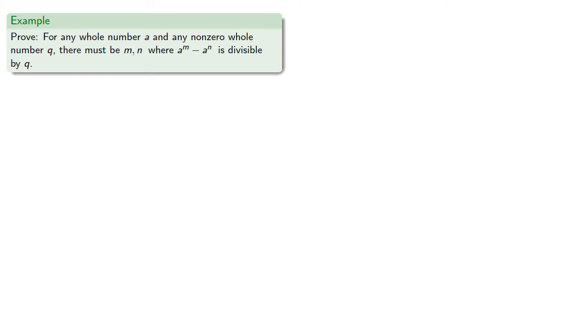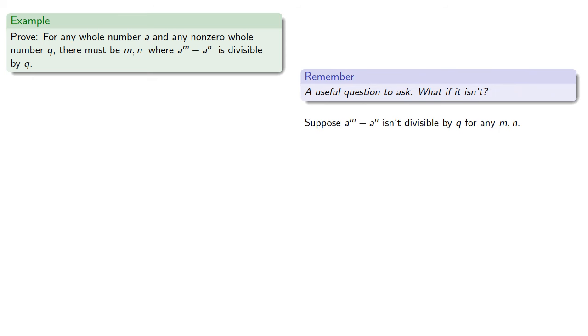So a useful question to ask is, what if it isn't? In this case, suppose our difference isn't divisible by q for any m or n. There must be some remainder, and that remainder has to be somewhere between 1 and q minus 1.